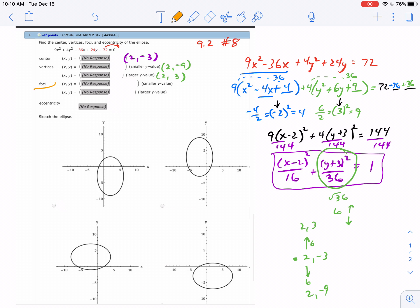Remember, the c value is the square root of the big denominator minus the small denominator. So my c value is the square root of (36 minus 16), which is the square root of 20. That can be written as 4 times 5, so technically my c value is 2√5.